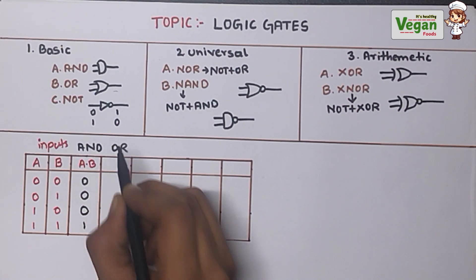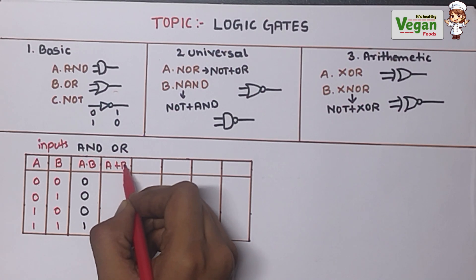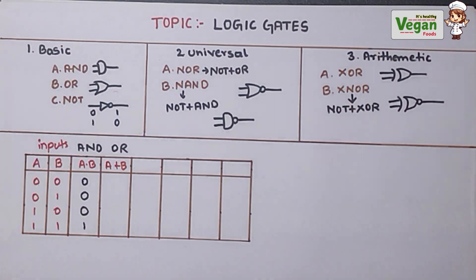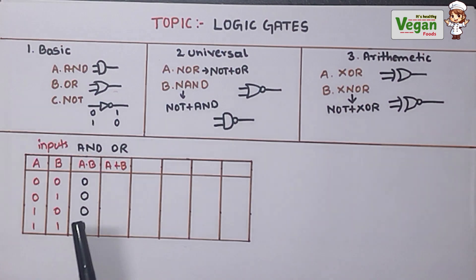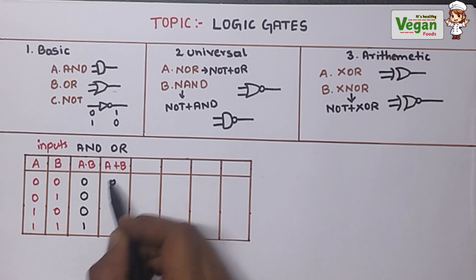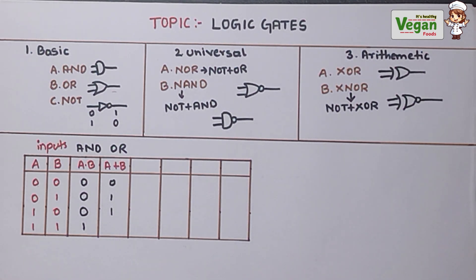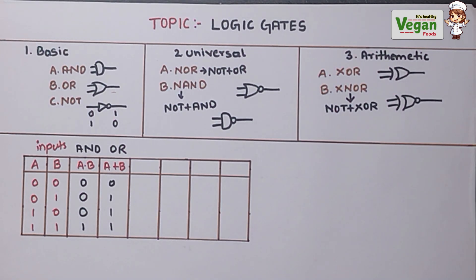Next is the OR gate. The formula for OR gate is A plus B. If either of the inputs is high, the output will be high. So: 0+0=0, 0+1=1, 1+0=1, and 1+1 gives 2 but in binary we represent it as 1. So 1 means high and 0 means low.